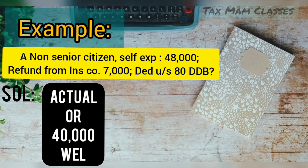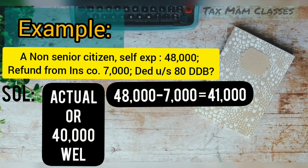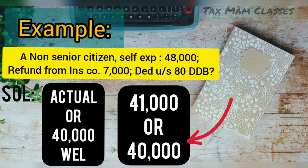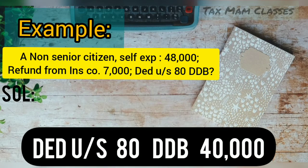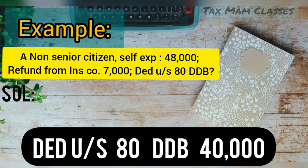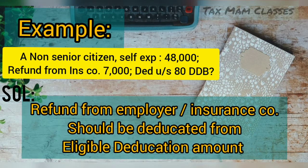For a non-senior citizen, the provision is: actual expenditure spent or ₹40,000, whichever is less, is allowed as deduction. The actual expenditure is ₹48,000, and the insurance repaid amount is ₹7,000, so 48,000 minus 7,000 equals ₹41,000. Comparing with ₹40,000, the deduction would be ₹40,000 — but this is the wrong process.